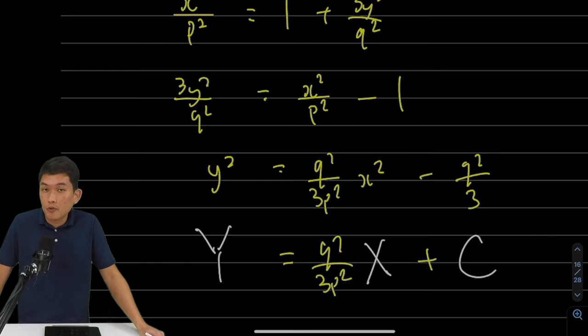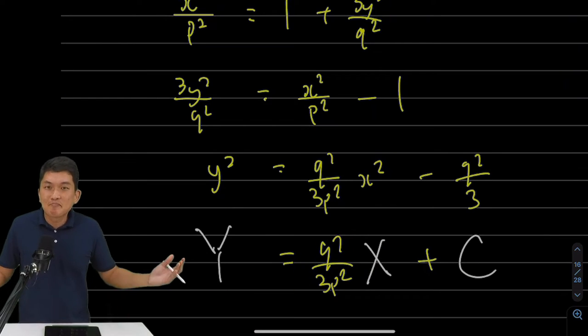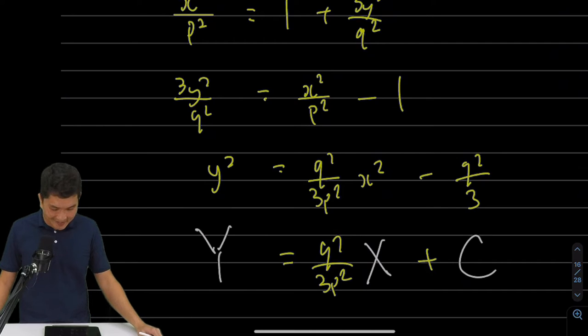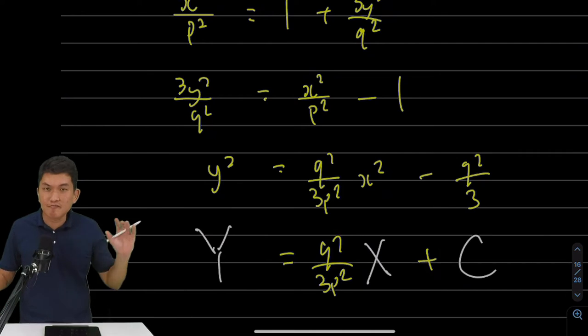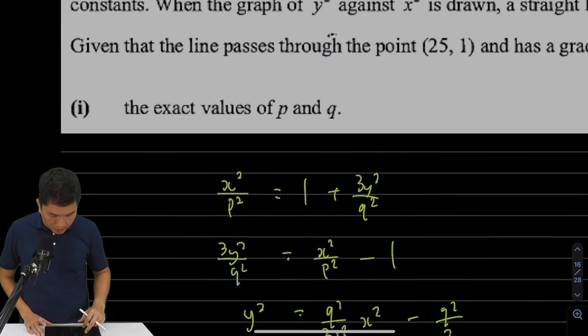Because if I let's say capital Y be y-square and capital X be x-square, then what we have here is just y equals to mx plus c. Pretty crazy if you think about it. We'll just turn a crazy-looking graph into a straight line. And let's read the question for some clues.